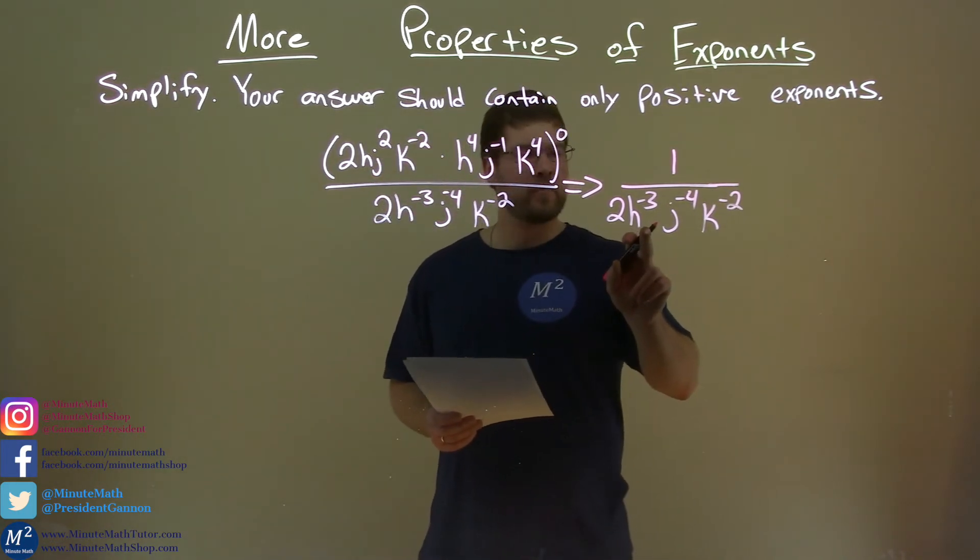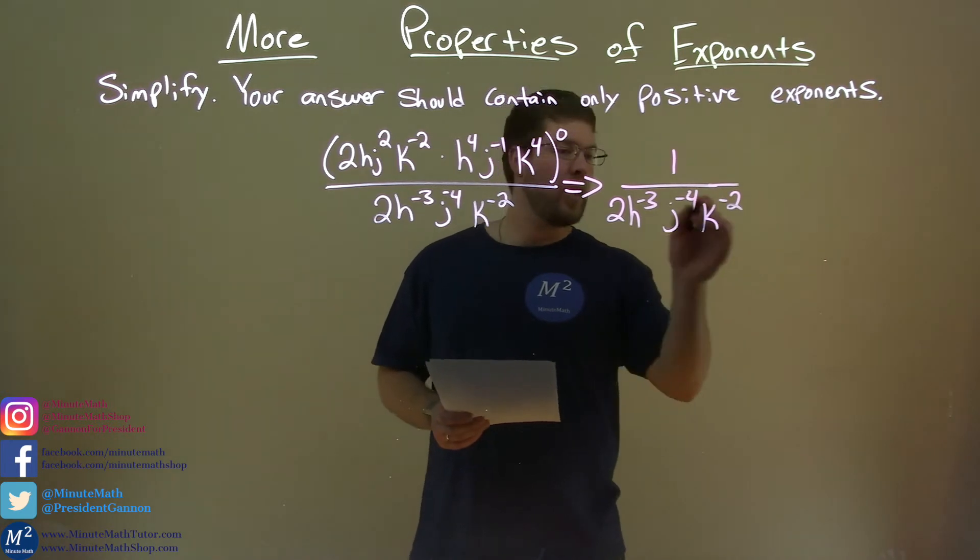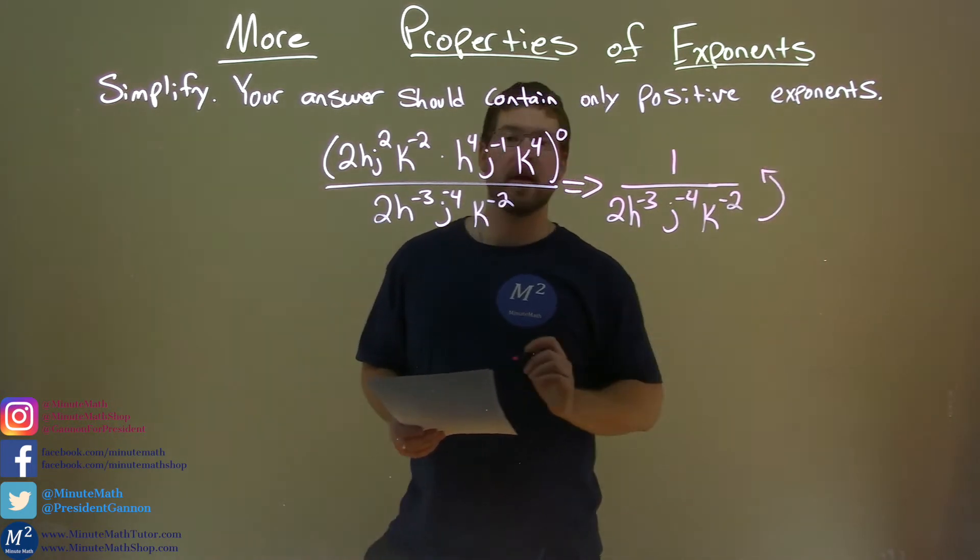Well, we can't have a negative exponent, so we make it positive. So, all these negative exponents in the denominator become positives in the numerator.